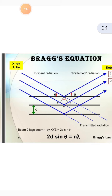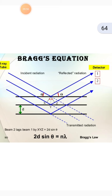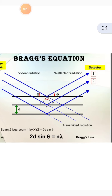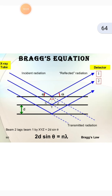Last is Bragg's equation — the most important topic in this part. In the Bragg equation diagram, the X-ray exit, the incident radiation and refracted radiation are shown, along with a detector. The formula given is 2d sinθ = nλ. The X-rays diffracted from atoms in a crystal lattice obey the law of reflection.